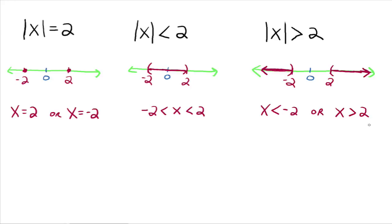This is the algebraic way to write what we have up here on the number line. So now our goal is we're going to bypass the graph and the number line situation, and go straight to equations and inequalities written down here in red. So now let's see an example.